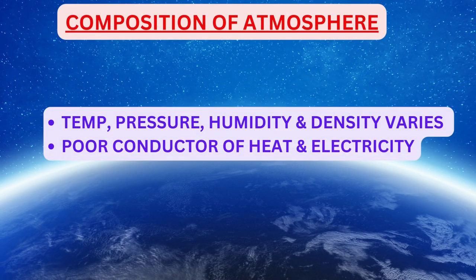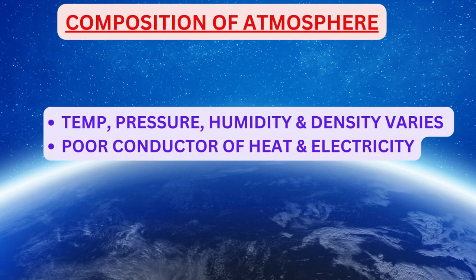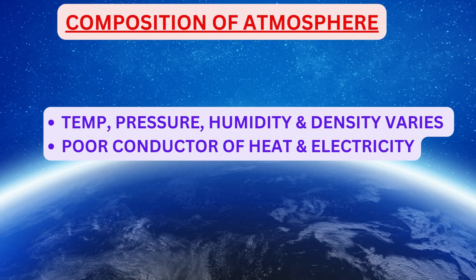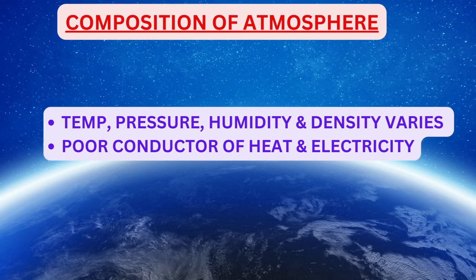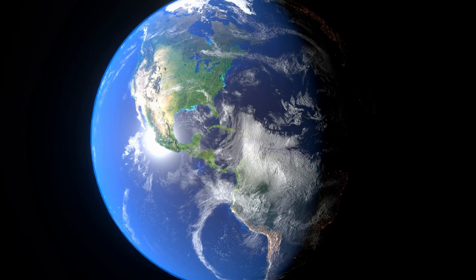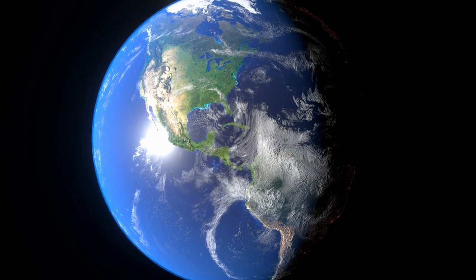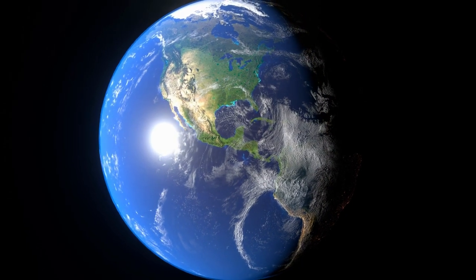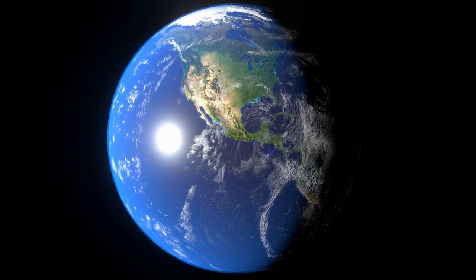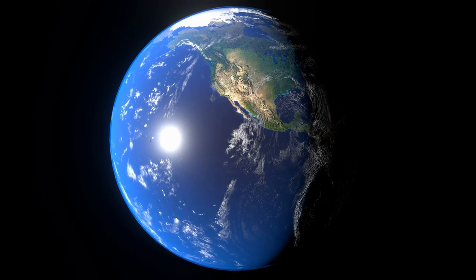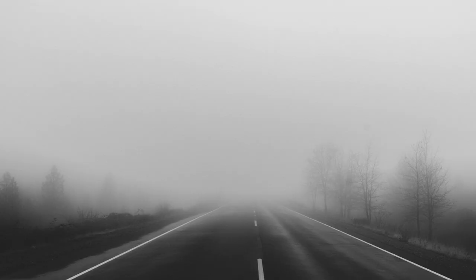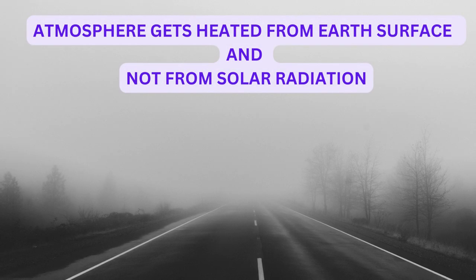Temperature, pressure, humidity and density vary vertically as well as horizontally in the atmosphere. Atmosphere is a poor conductor of heat and electricity. Remember, our atmosphere is heated mainly from below — from re-radiation of earth — and not much from the solar radiation which comes from above.